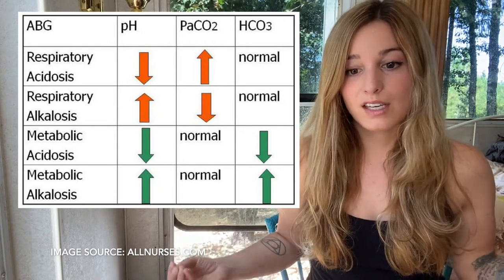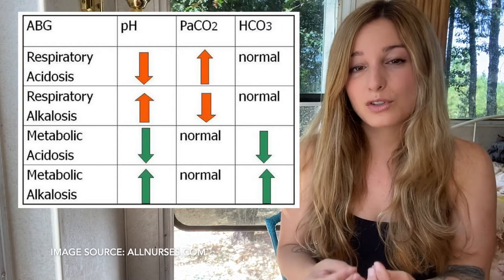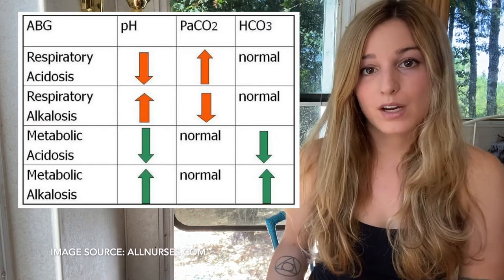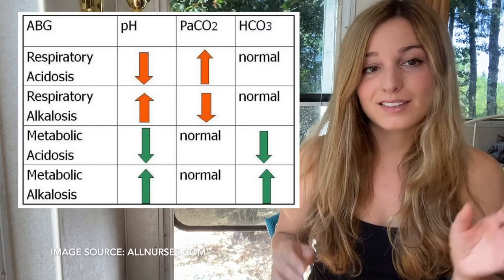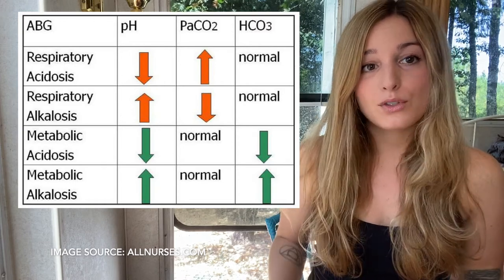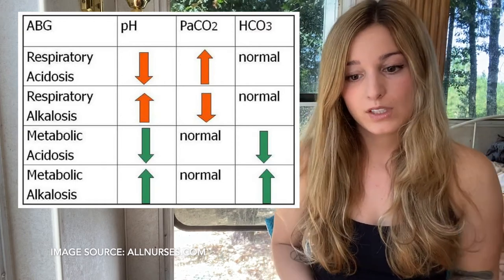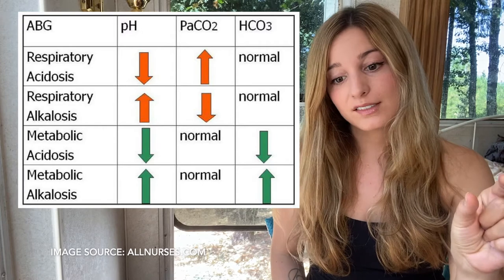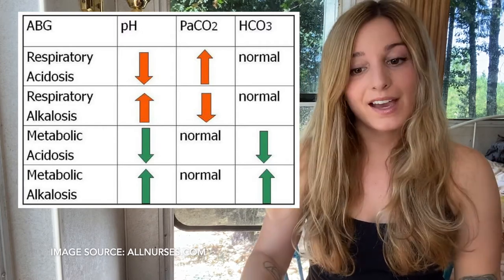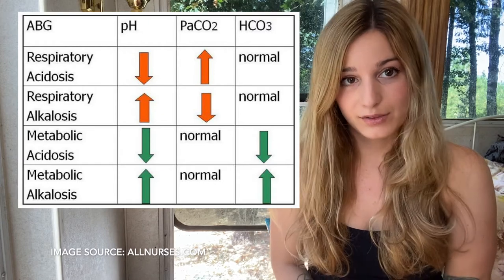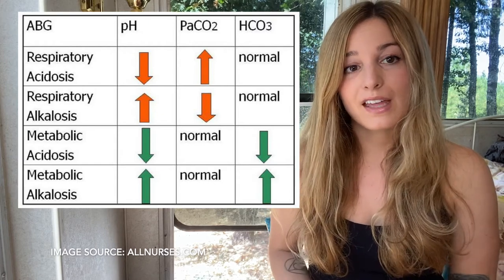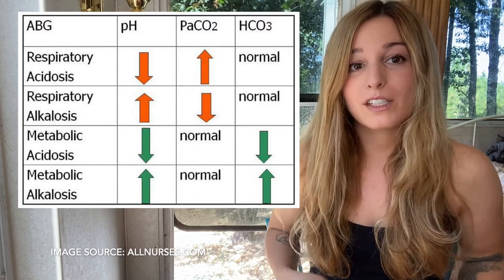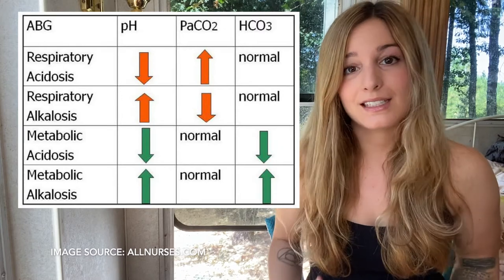Respiratory alkalosis is the opposite of respiratory acidosis: pH is high, above 7.45; CO₂ is low; bicarb is normal. So with both respiratory acidosis and alkalosis, the bicarb is normal. Signs and symptoms of respiratory alkalosis include hyperventilation, panic attacks, and anxiety — things that cause your breathing to become really fast and shallow — as well as emotions and pain.